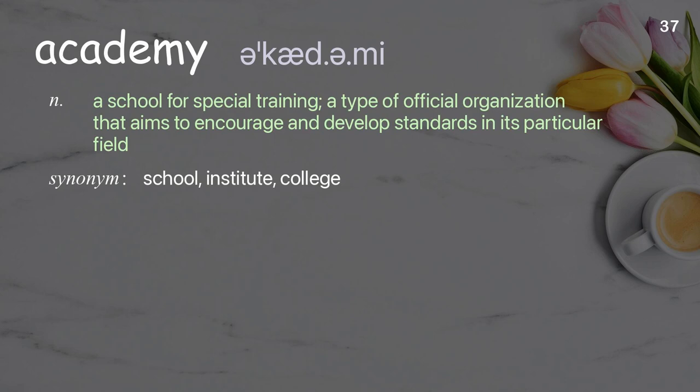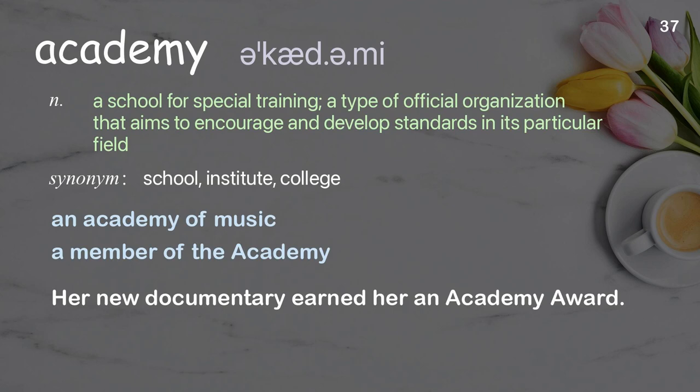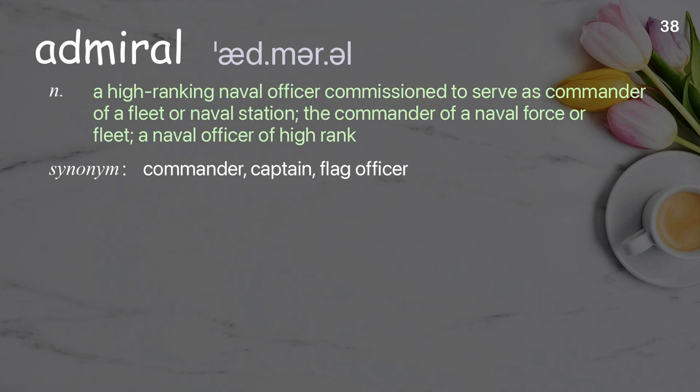Academy: a school for special training; a type of official organization that aims to encourage and develop standards in its particular field. Examples: an academy of music; a member of the academy. Her new documentary earned her an academy award.